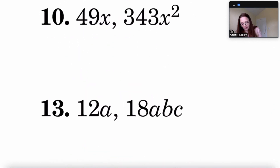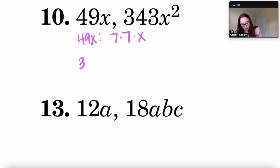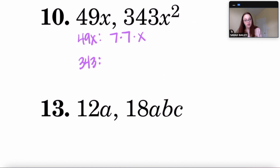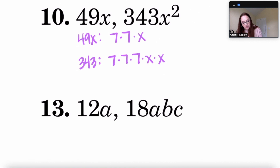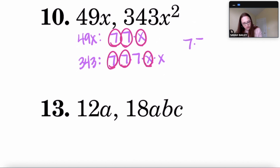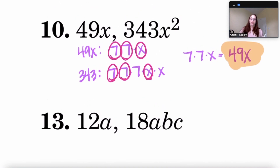For 49x and 343x²: 49x factors as 7 × 7 × x. For 343x²: typing 343 ÷ 7 into the calculator gives 49, so 343 is 7 × 49, which is 7 × 7 × 7, then times x times x. Both share two 7s and one x, so the GCF is 7 × 7 × x = 49x.